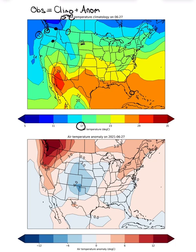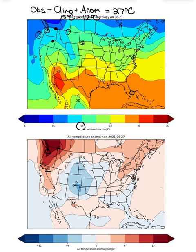We then go down to the bottom plot and look at the anomaly observed on that day. I'm going to circle Seattle here and estimate that number to be around 12°C. Here's my 6 contour, here's my 9 contour — Seattle looks like it's lying right along this contour, which going by threes would be 12.